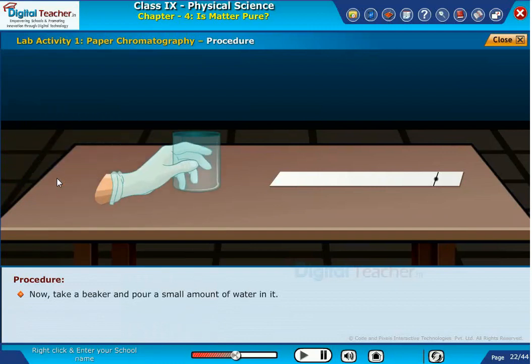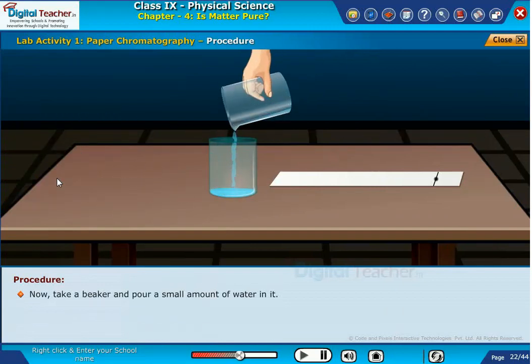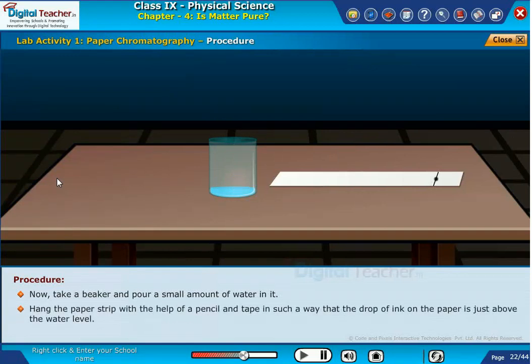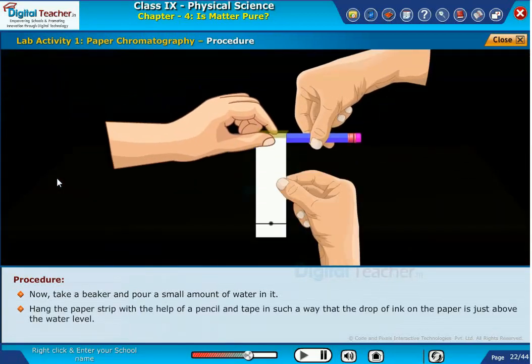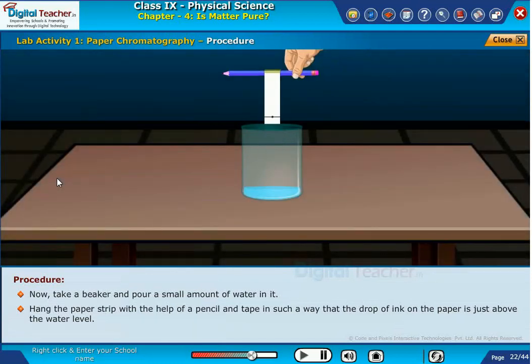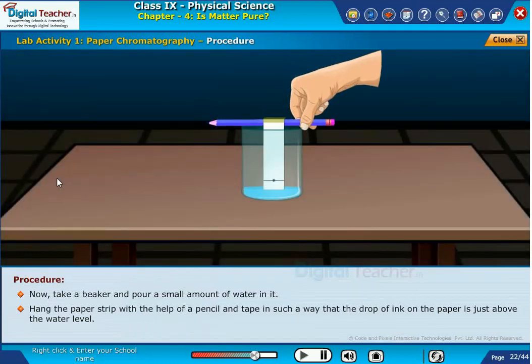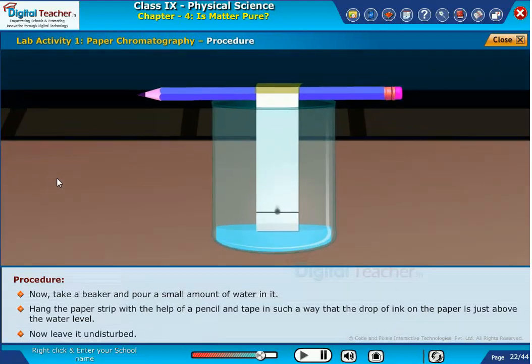Now take a beaker and pour a small amount of water in it. Hang the paper strip with the help of a pencil and tape in such a way that the drop of ink on the paper is just above the water level. Now leave it undisturbed.